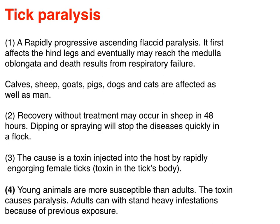One of the important conditions encountered in the clinic is tick paralysis — a rapidly progressive ascending flaccid paralysis. Removal of the ticks without care is the cause of tick paralysis. It first affects the hind legs and may eventually reach the medulla oblongata, resulting in respiratory failure. Calves, sheep, goats, dogs, and cats are affected. Recovery without treatment may occur in sheep within 48 hours. Dipping or spraying will stop the disease quickly in a flock; therefore, control of tick infestation in animals is essential.